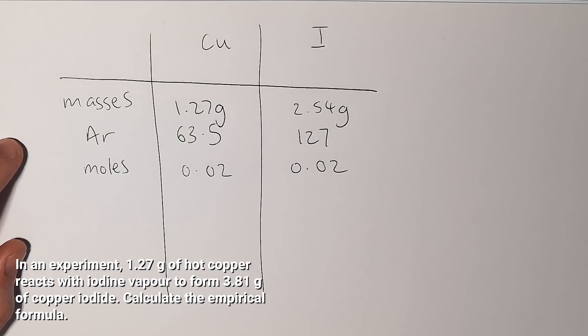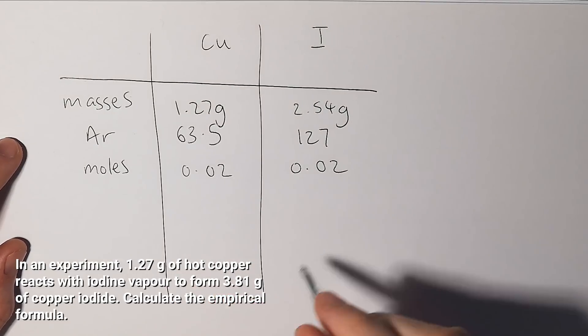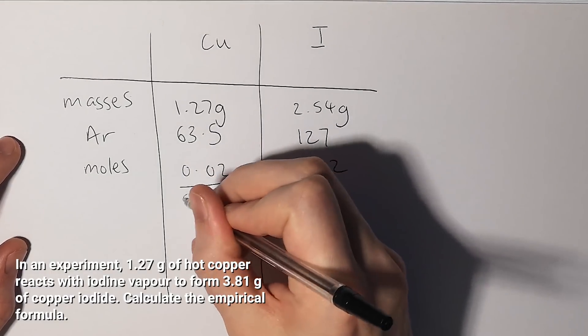Now empirical formula, the definition you need to know is that it is the simplest whole number ratio of atoms in a substance. Now these aren't whole numbers so we need to divide them both by the smallest value.